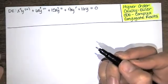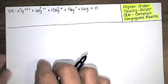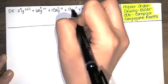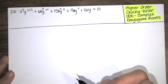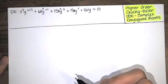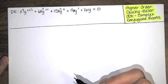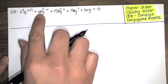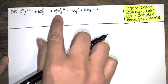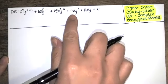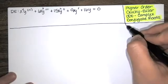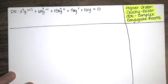This is a Cauchy-Euler differential equation, and this example was designed to have complex conjugate roots. We've got x to the fourth times the fourth derivative, an x cubed times the third derivative, an x squared times the second derivative, an x to the first times the first derivative, and no x's times the y to the zero. So this differential equation is a Cauchy-Euler equation.